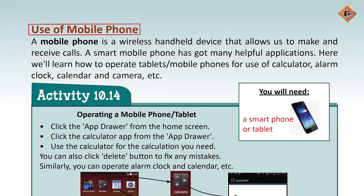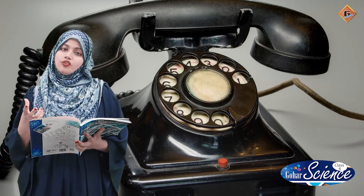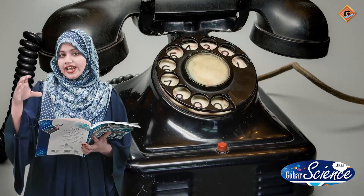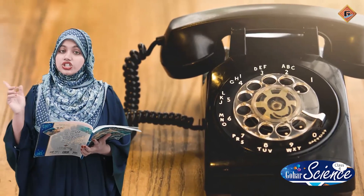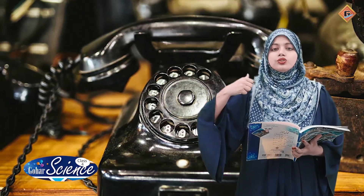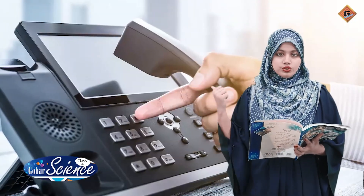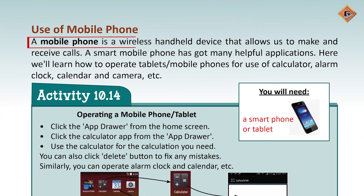Page 129 — 'Use of Mobile Phone.' Humein bataya ja raha hai ki yeh wireless hai. Aapko pata hai purane zamaane mein jab telephone aaya tha, to telephone ke saath wires laghi hoti thin aur woh ek hi jagah par pada hota tha. Ek ghar mein ek telephone hota tha aur jisne bhi telephone use karna hota woh uske paas jaata tha, usse uthata tha — uski wires ke through baat ho sakti thi.